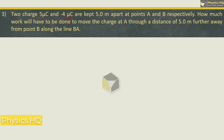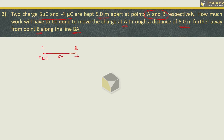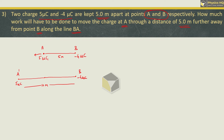Next: two charges, 5 microcoulomb and minus 4 microcoulomb, are kept 5 meters apart at points A and B respectively. How much work will have to be done to move the charge at A through a distance of 5 meters further away from point B along the line AB? Let us say the first charge is at point A and the other charge is at point B, with a distance of 5 meters between them.